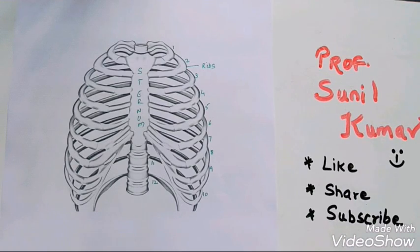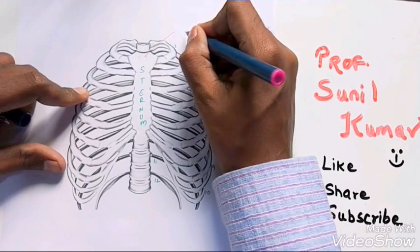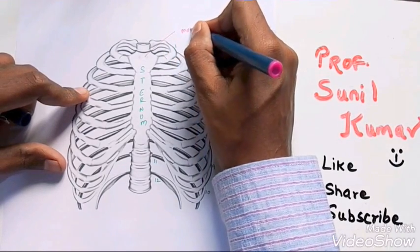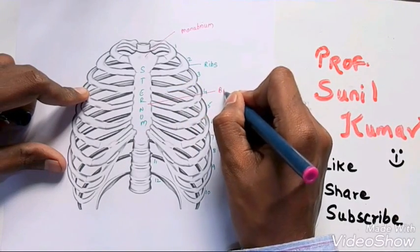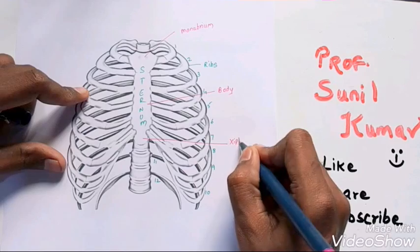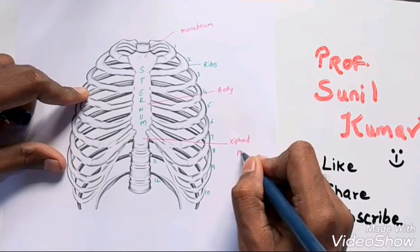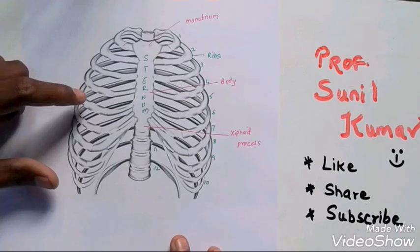So like this, your 12 ribs are arranged. When you talk about the sternum, it is divided into three parts. The upper part is called manubrium, the middle part is called body, and the last is called xiphoid process.